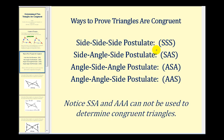Now remember from the previous video, there are four postulates that can be used to verify two triangles are congruent: the side-side-side postulate, side-angle-side postulate, angle-side-angle postulate, and angle-angle-side postulate. Notice that side-side-angle and angle-angle-angle cannot be used to determine congruent triangles.